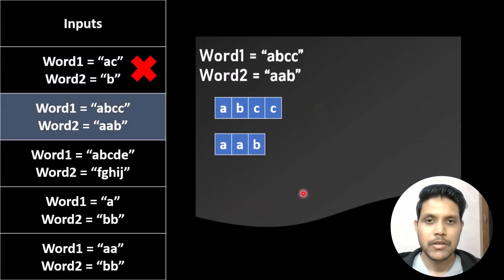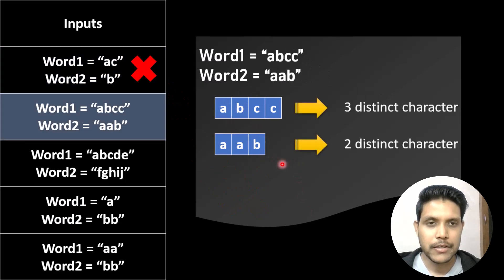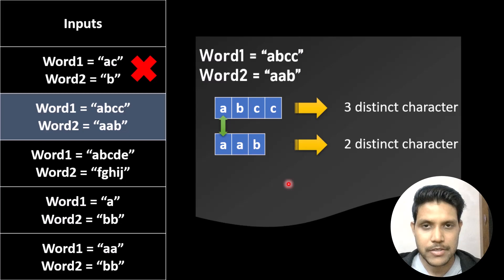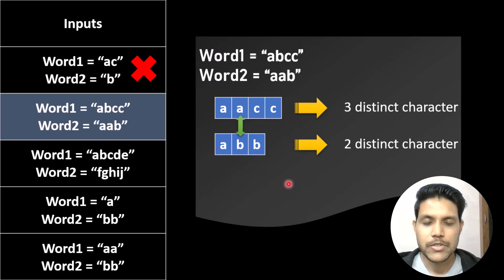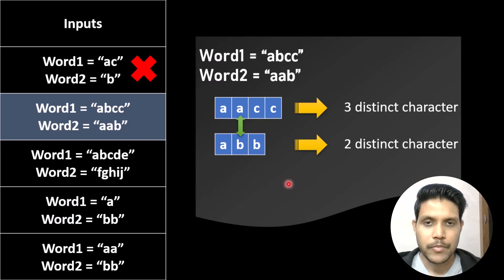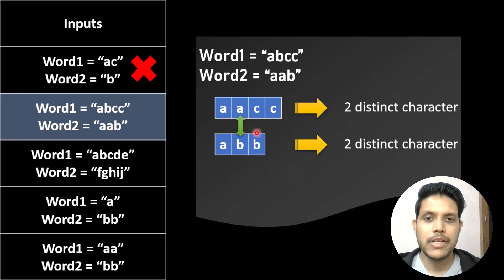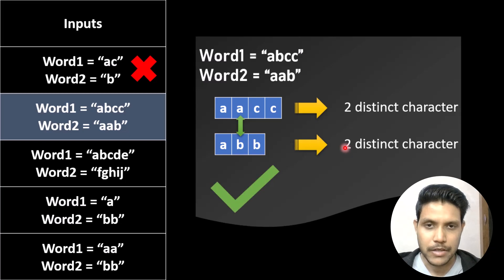In the second example, we show the words in array format and calculate the number of distinct characters. There are three distinct characters in word1 and two in word2. Checking index 0 — the characters are equal so swapping makes no sense. Moving to index 1, we swap. After the swap, both words have the same number of distinct characters. Since we found that one swap makes the counts equal, we return true.